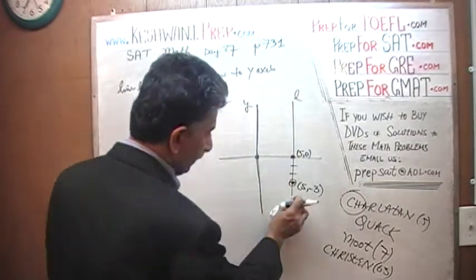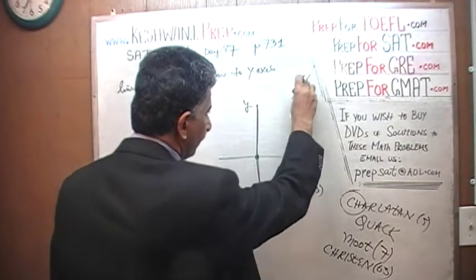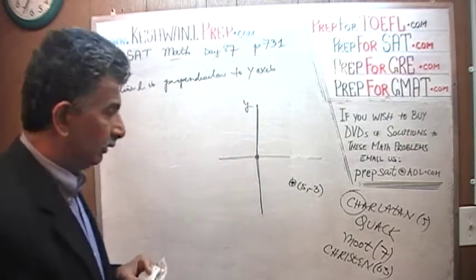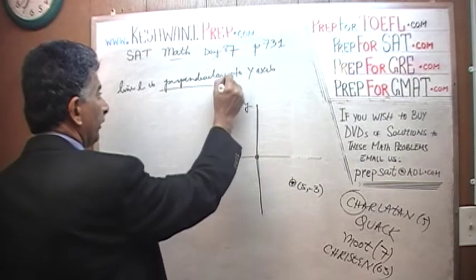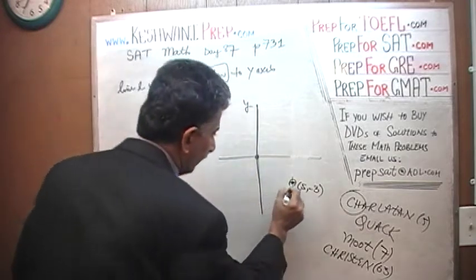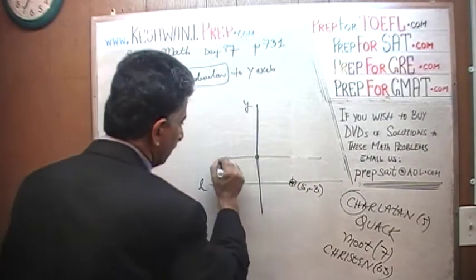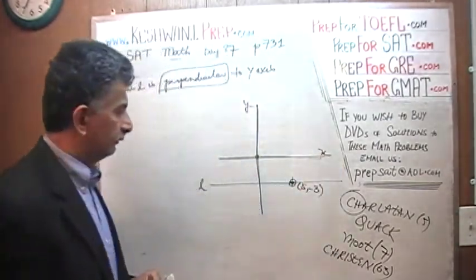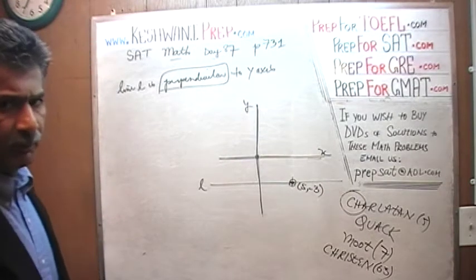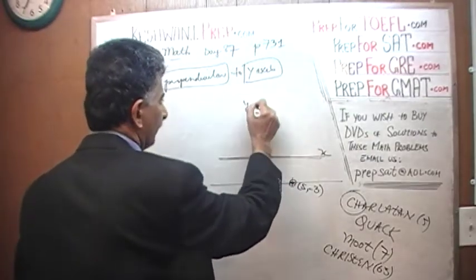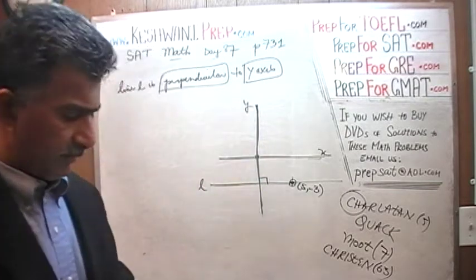This point — (5, -3) — can stay here, but the rest has to go. I almost picked the wrong answer because I wasn't paying attention. It says perpendicular, not parallel. So here is our point, and the line we are talking about is line L. It is perpendicular to the y-axis. Here is the y-axis, here is our line, and it is perpendicular. Finally got it right.